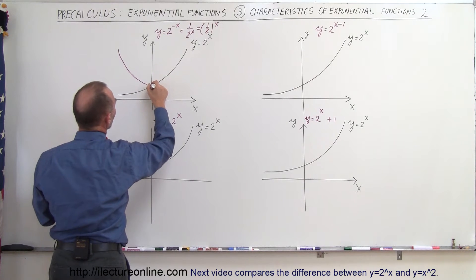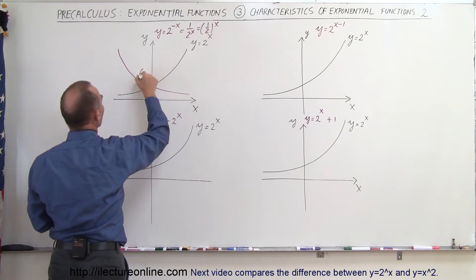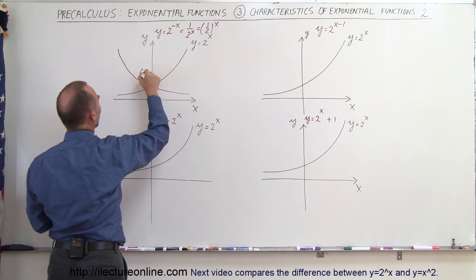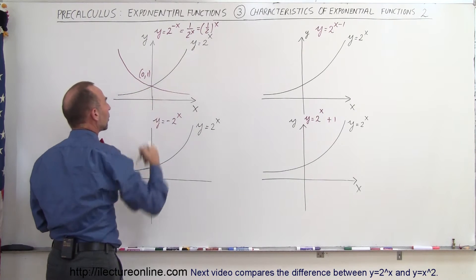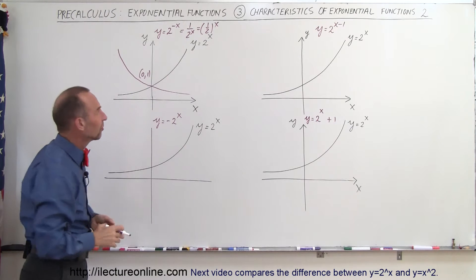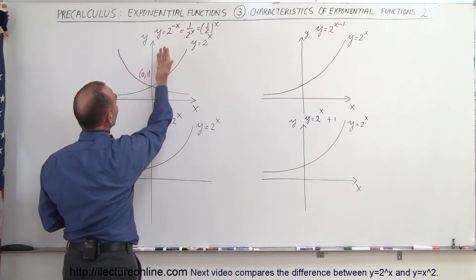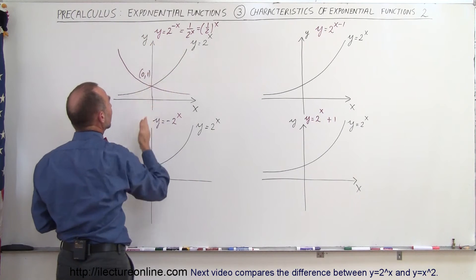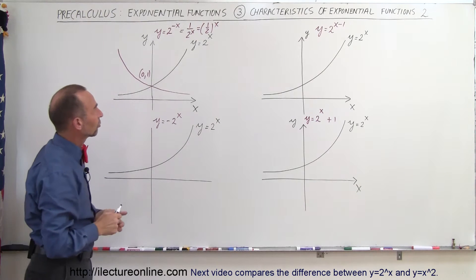It will still go to this point where we have x equals 0, y equals 1, so it still goes to the point 0, 1 where the y-axis is equal to 1, but here you can see that's basically a mirror image about the y-axis right there.